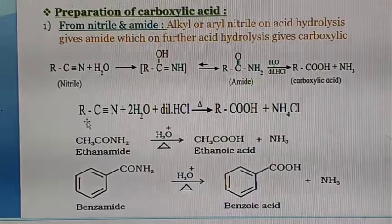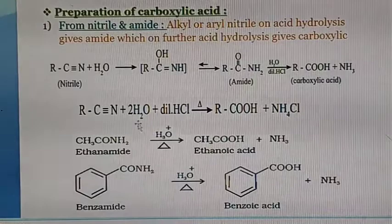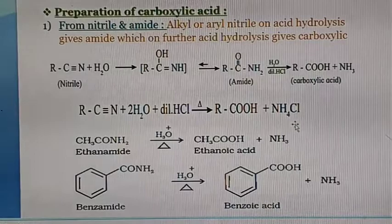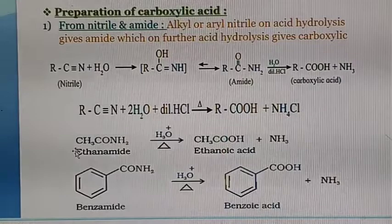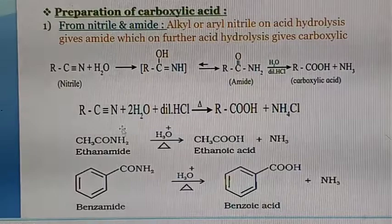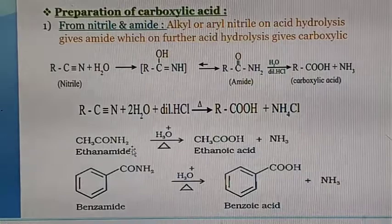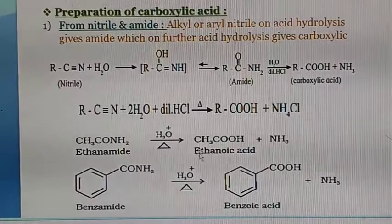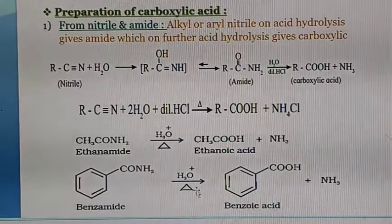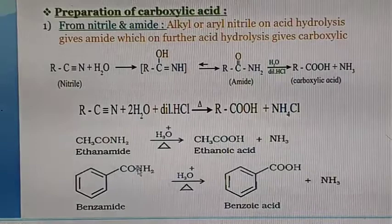We can write this reaction in a single step: when R–C≡N reacts with water in presence of dilute acid, it gives the corresponding carboxylic acid with formation of ammonium chloride. For example, CH₃C≡N reacts with one molecule of water to give ethanamide, which on acid hydrolysis gives ethanoic acid. Similarly, benzamide (C₆H₅CONH₂) on hydrolysis gives benzoic acid.